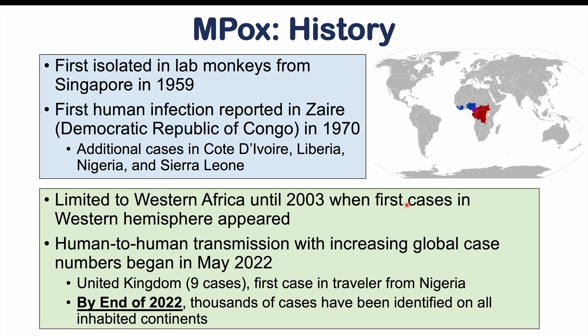Starting in May 2022, we began seeing more human-to-human transmission, which drove increasing global case numbers. Initially, cases appeared in the United Kingdom from a traveler from Nigeria — only a handful at first. But by the end of 2022, thousands of cases had been identified on all inhabited continents, with over 30,000 cases reported in the United States alone.